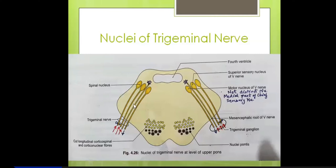The fibers entering and relaying in the superior sensory nucleus of the trigeminal nerve: this nucleus lies at the upper section of the pons and receives mainly proprioceptive sensations. Comparing with the spinal cord, the spinal nucleus of the trigeminal is homologous to substantia gelatinosa and nucleus proprius of the spinal cord — corresponding to laminae II and III.